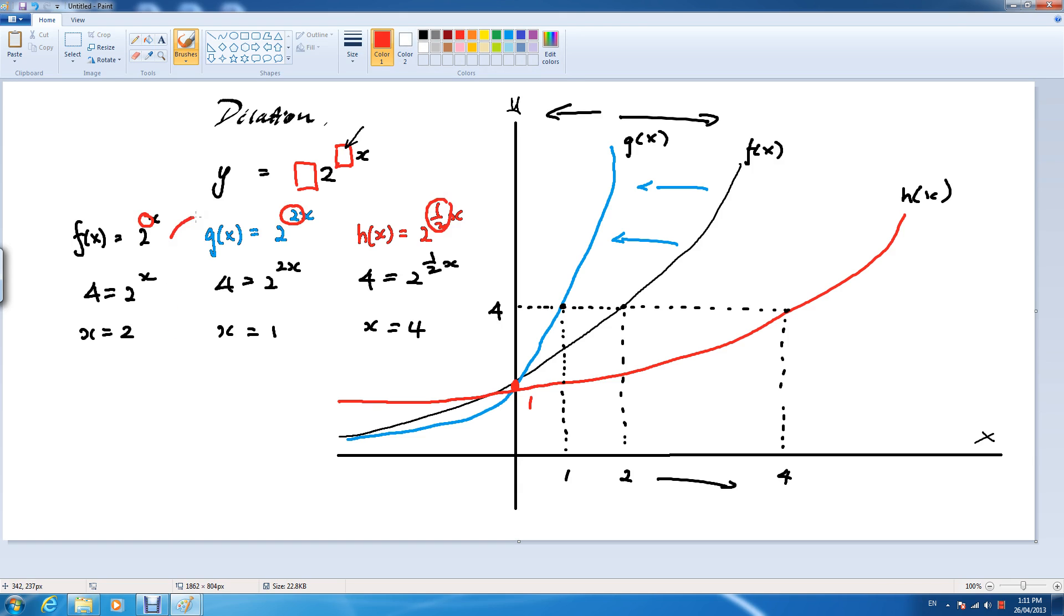From the black one to the blue one, it's 2. Therefore, the factor of dilation is 1 over whatever that number is. It's 2. So it's the reciprocal, 1 over. And for this one, the factor is 1 over whatever that number is in there. And that gives you 2.